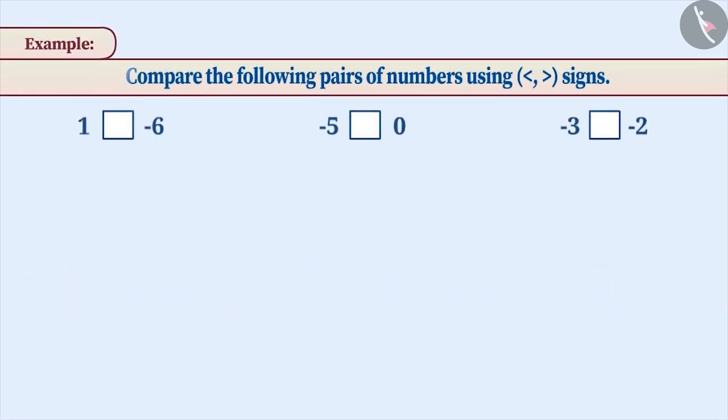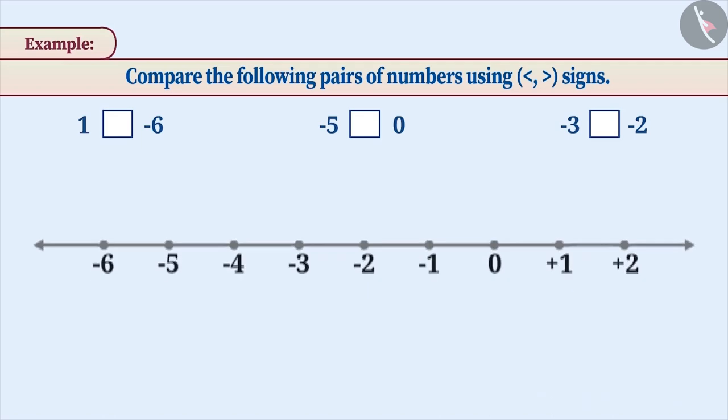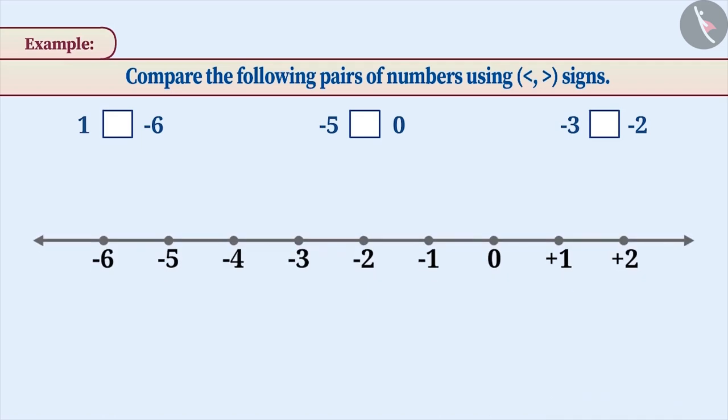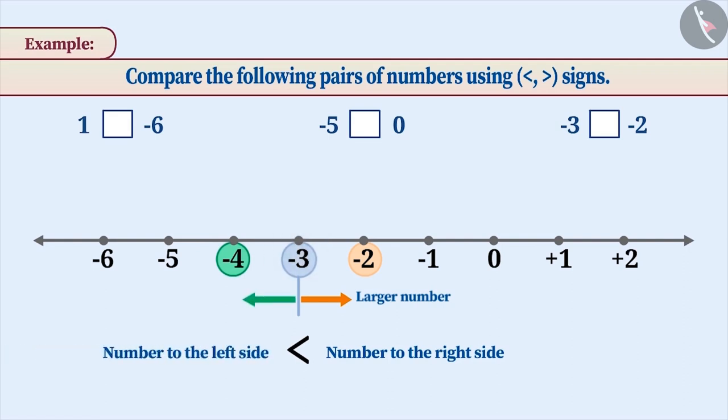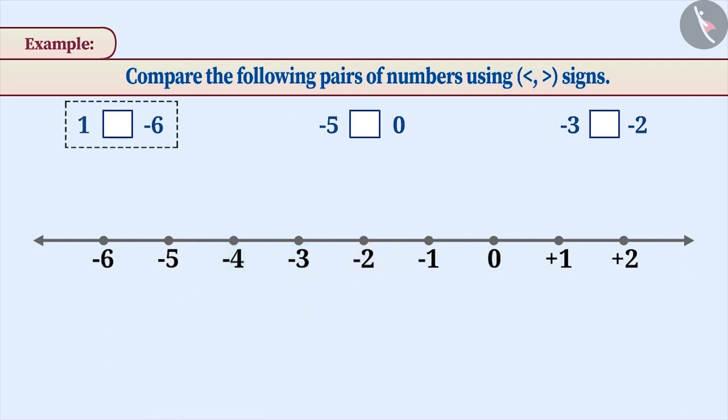Next example. Compare the following pairs of numbers using these signs. First of all, we have to compare the given numbers. Then, on the basis of comparison, we have to use the given sign. In order to do this, we will use the number line. If a number lies to the right side of another number on a number line, then it is the larger number of the two. Similarly, if a number lies to the left side of another number, then it is the smaller number of the two.